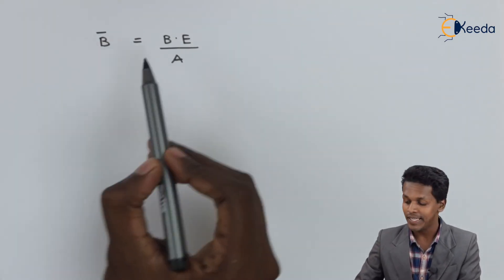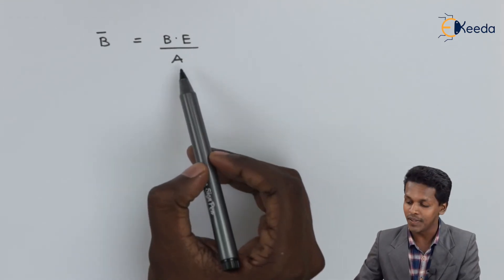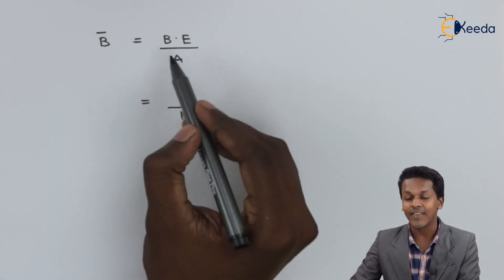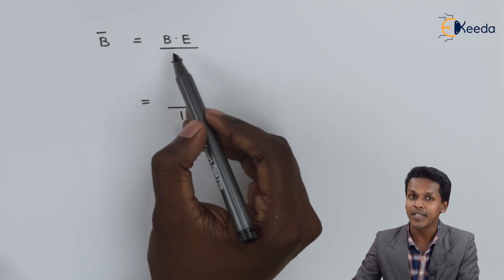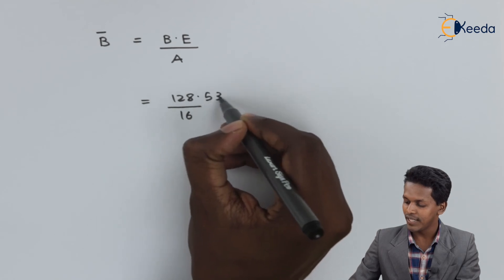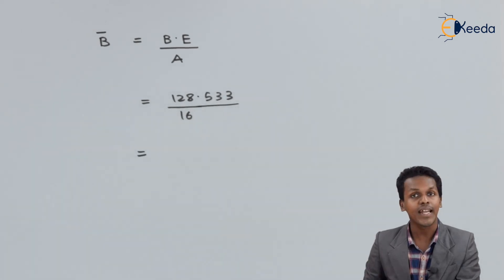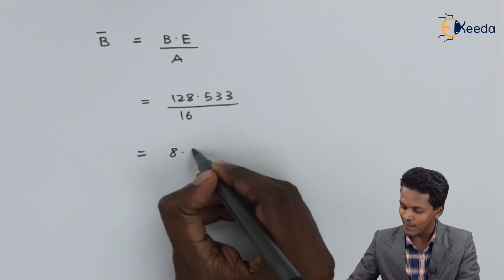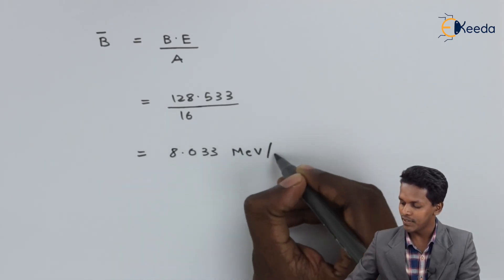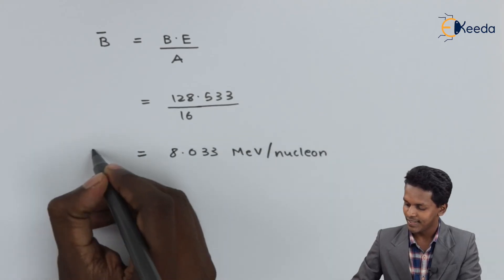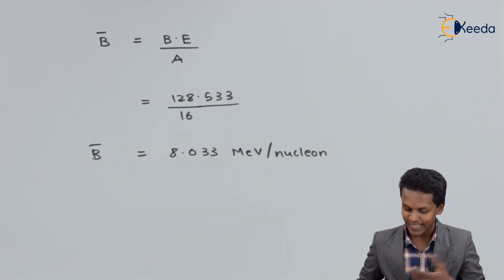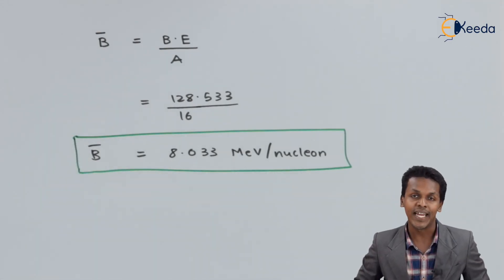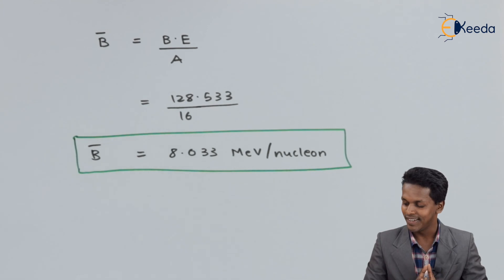Now we calculate the binding energy per nucleon. The formula is: binding energy per nucleon equals binding energy divided by the atomic mass number A. For oxygen, A is 16 and the binding energy is 128.533 MeV. Dividing gives us 8.033 MeV per nucleon — this is the binding energy per nucleon for the oxygen atom with Z = 8 and A = 16.